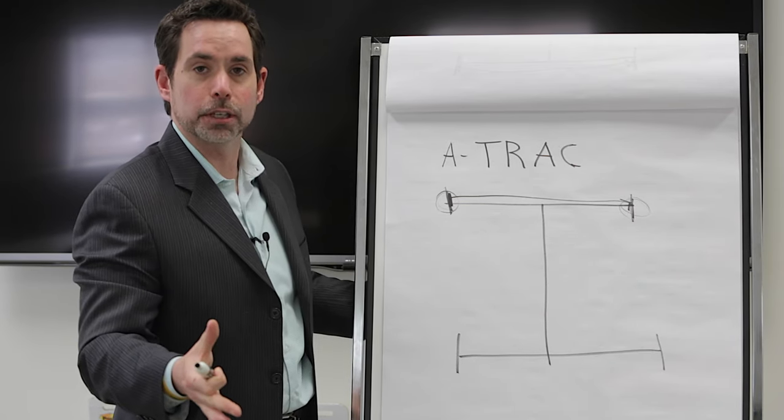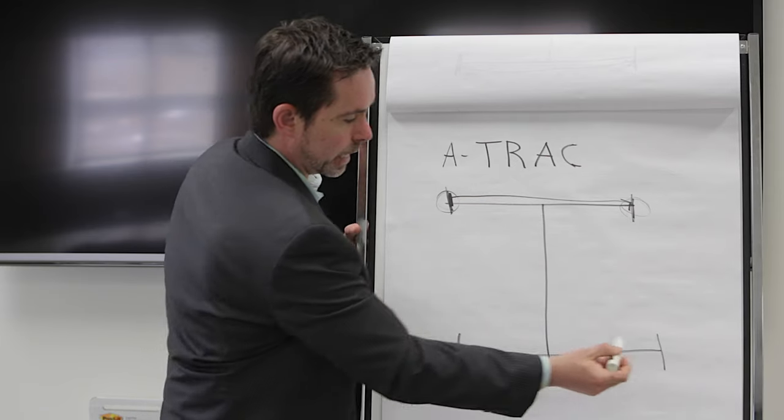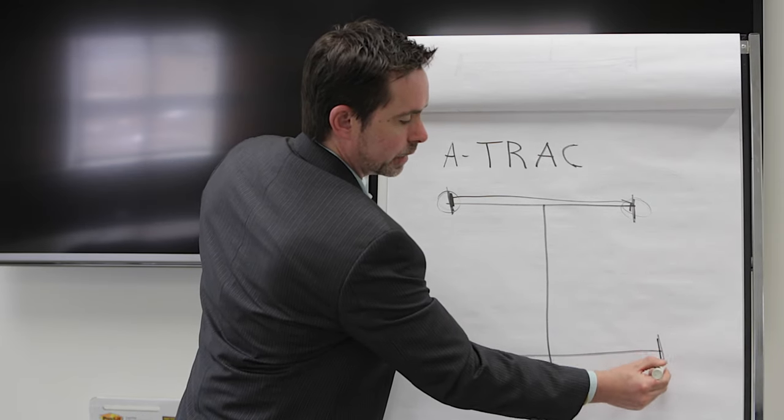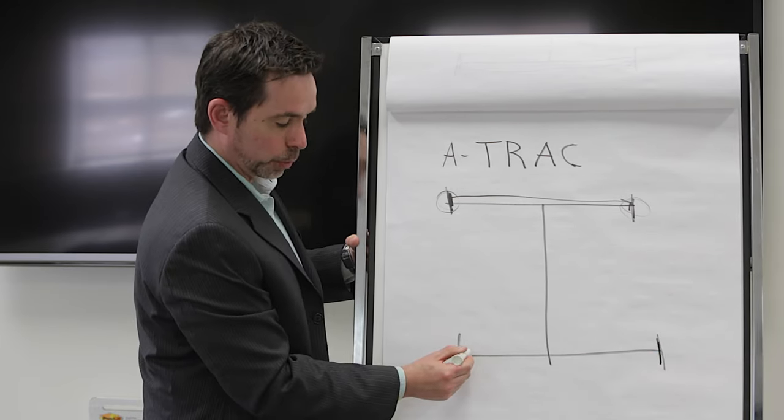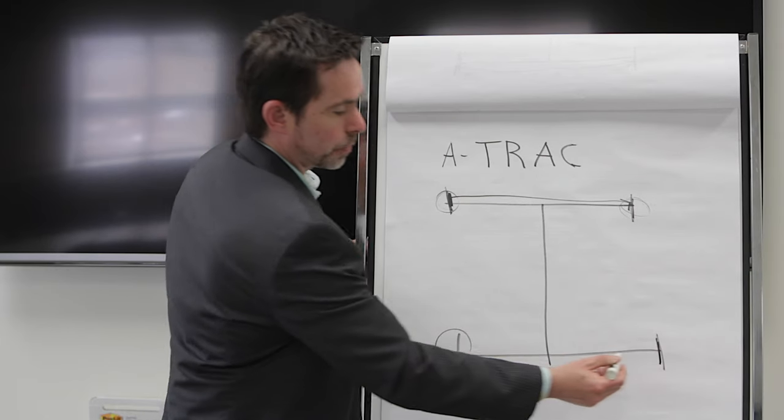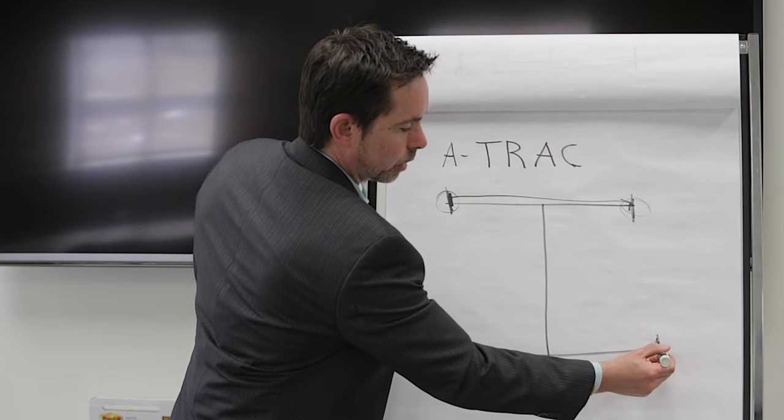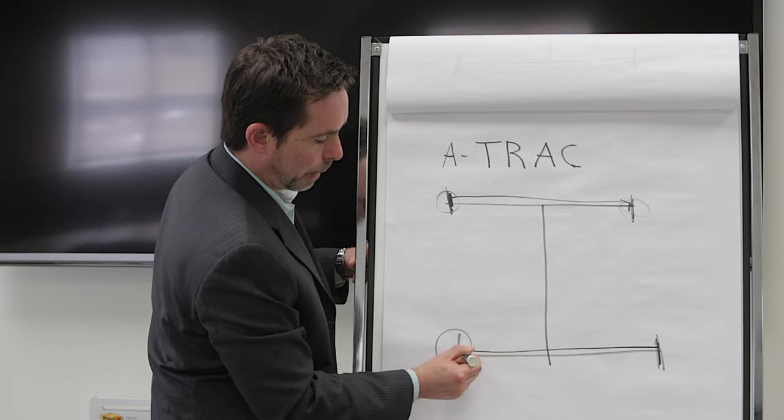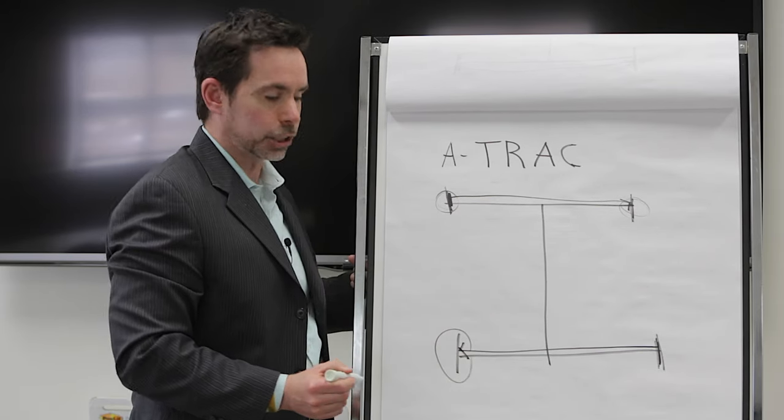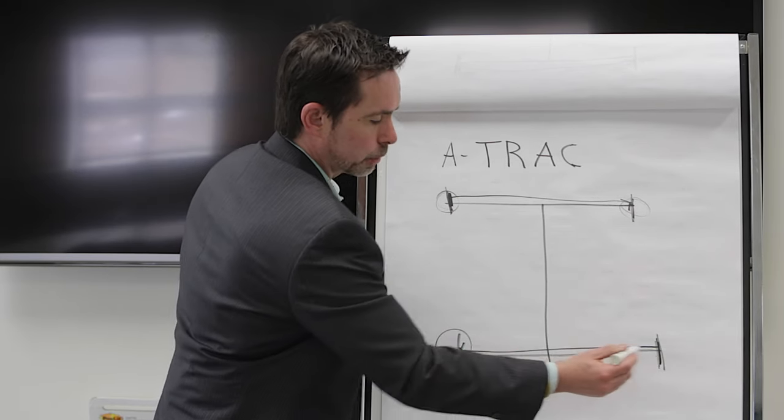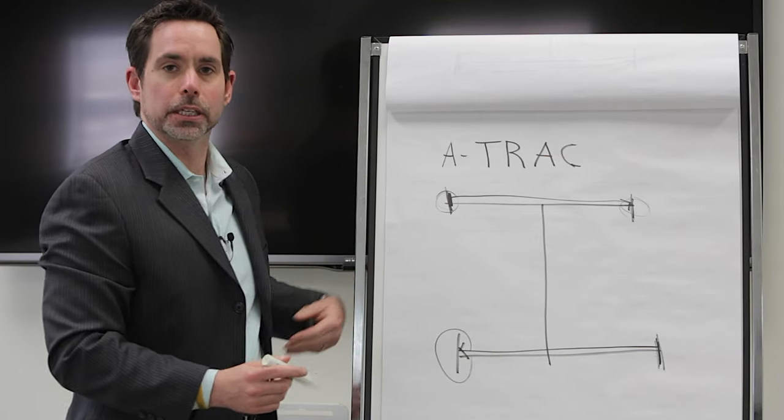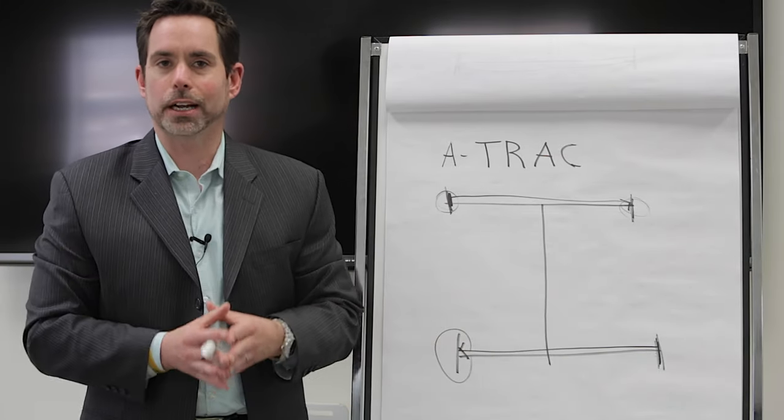And since we're in four-wheel drive, it does the same thing for the rear axle. Let's say this wheel did not have traction. This wheel had traction. Brakes would apply to this wheel and then power would be sent to the opposite wheel with the traction to get both wheels spinning at about the same speed. That is A-Track.